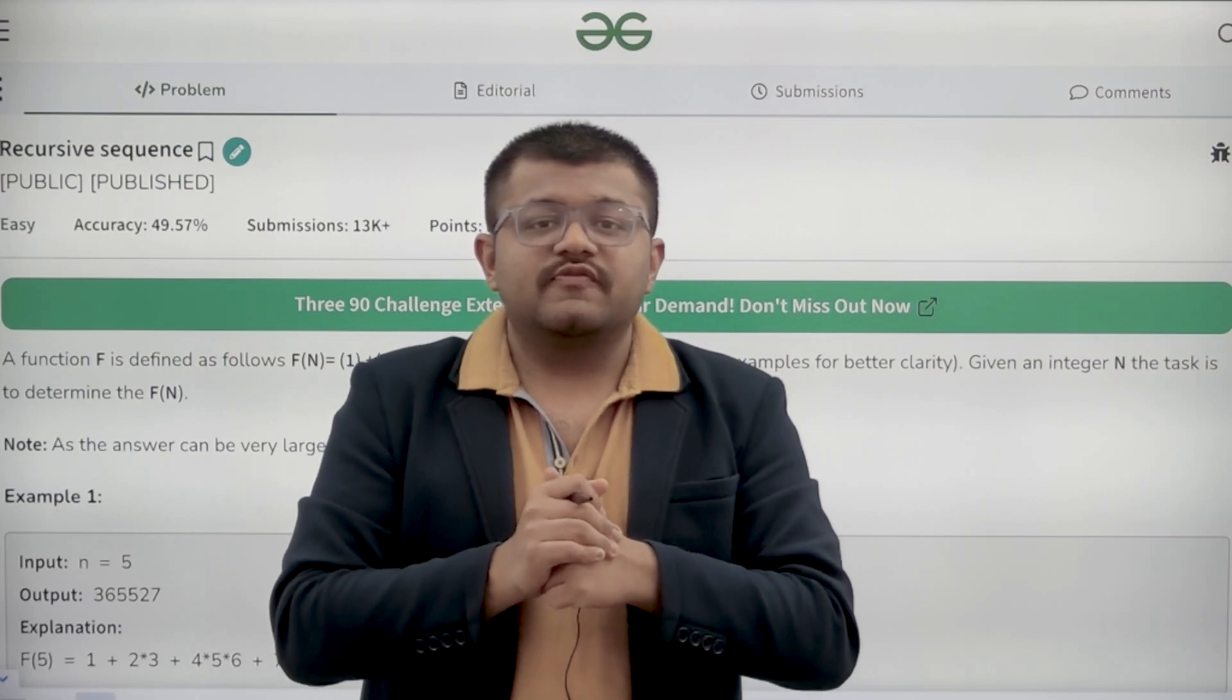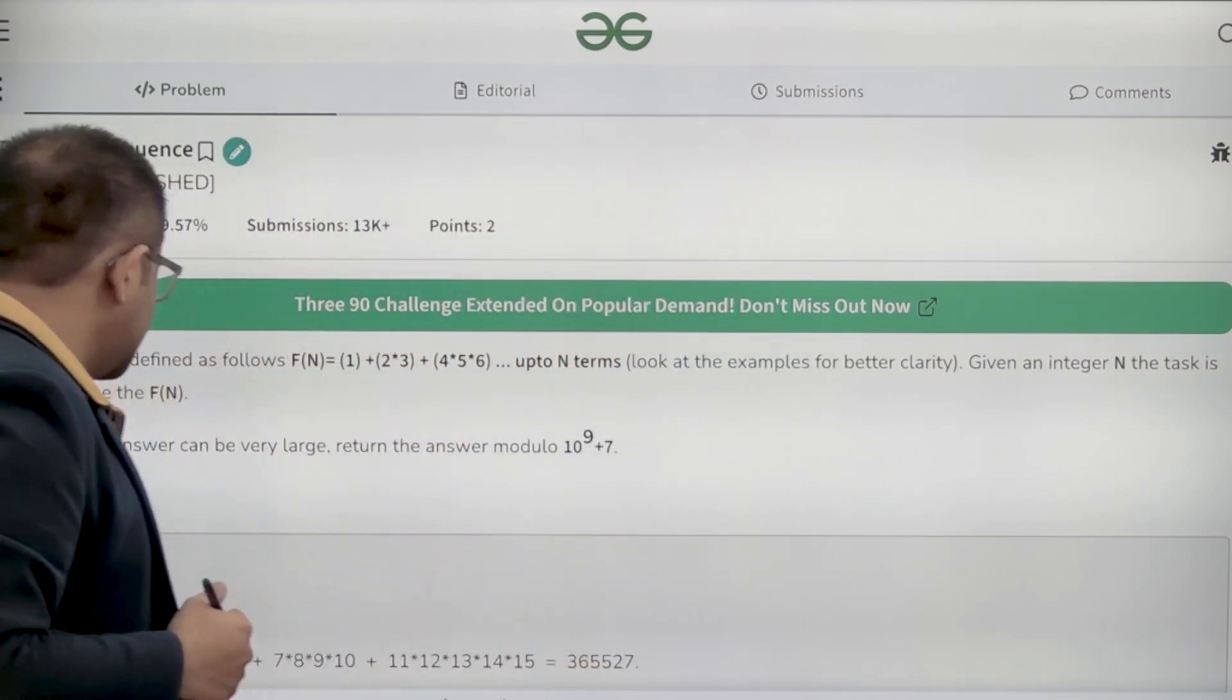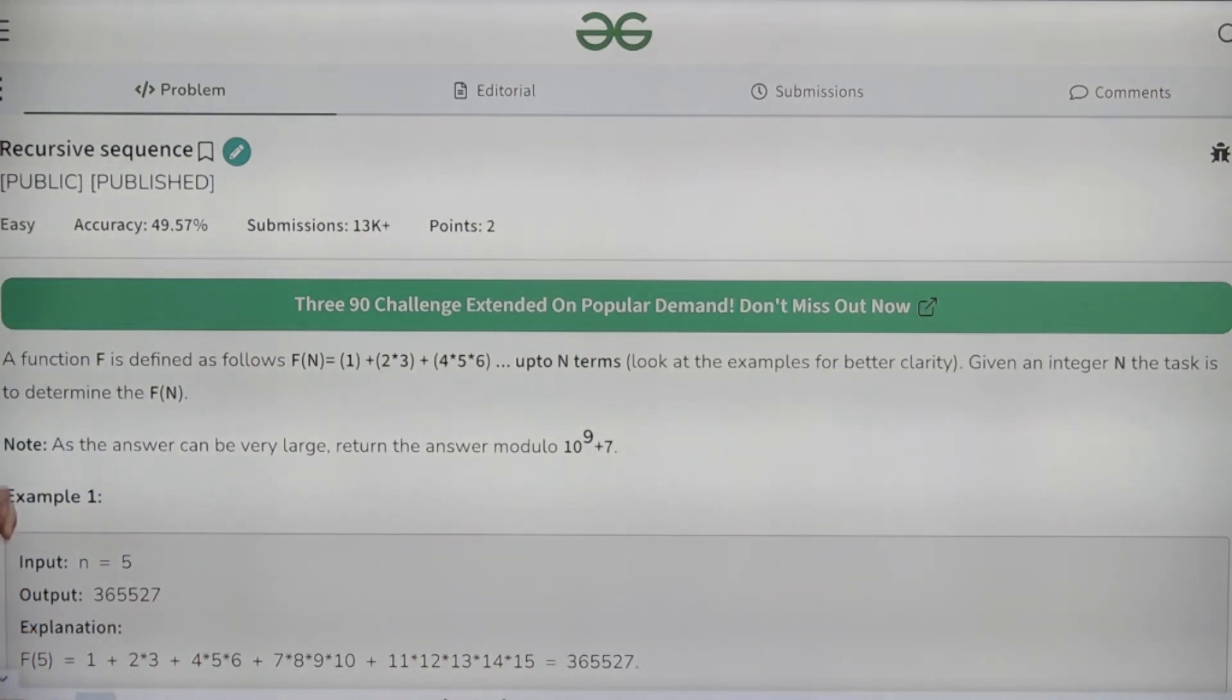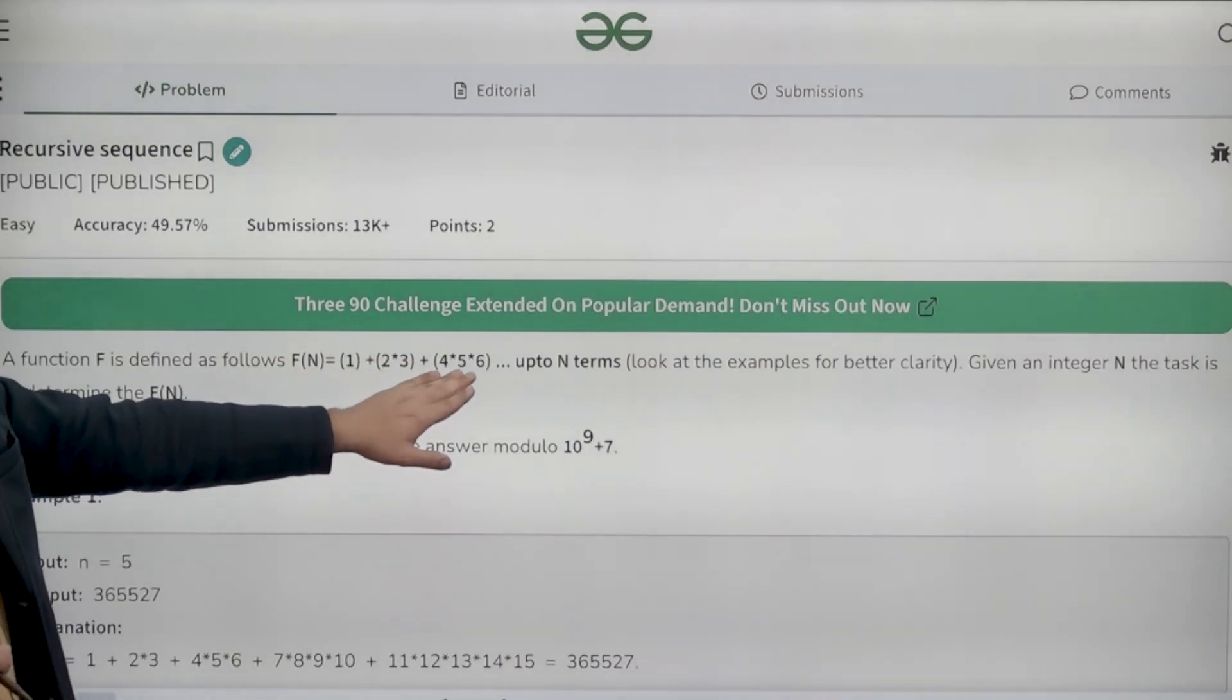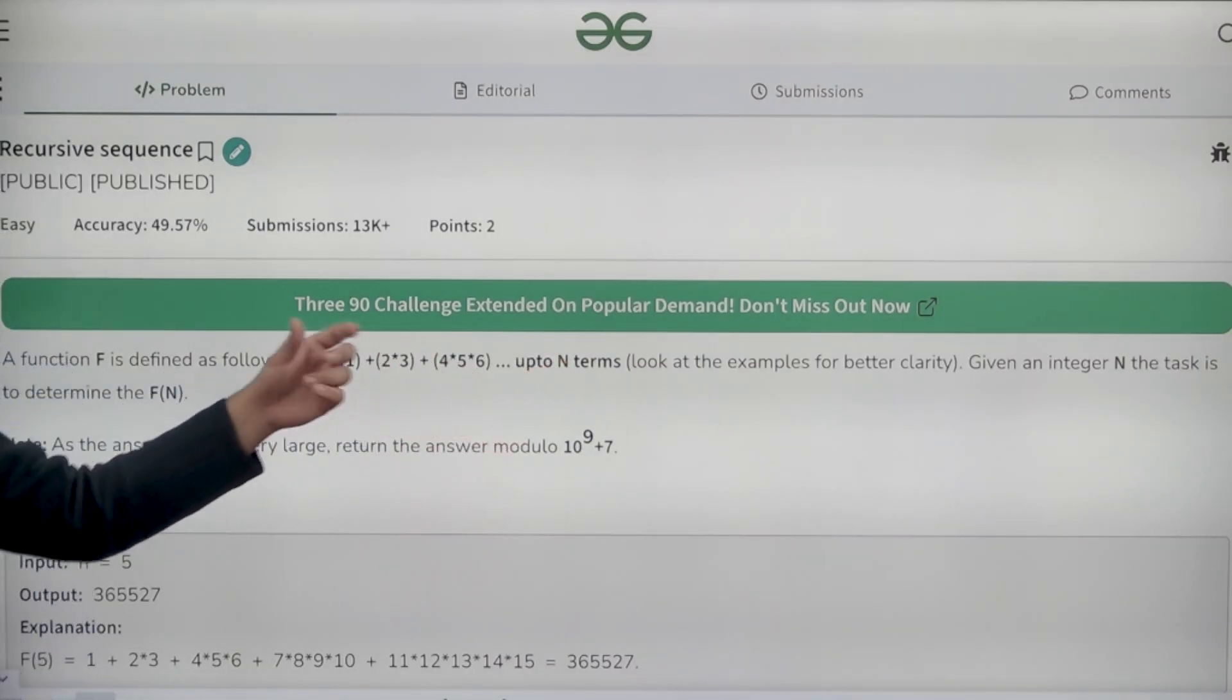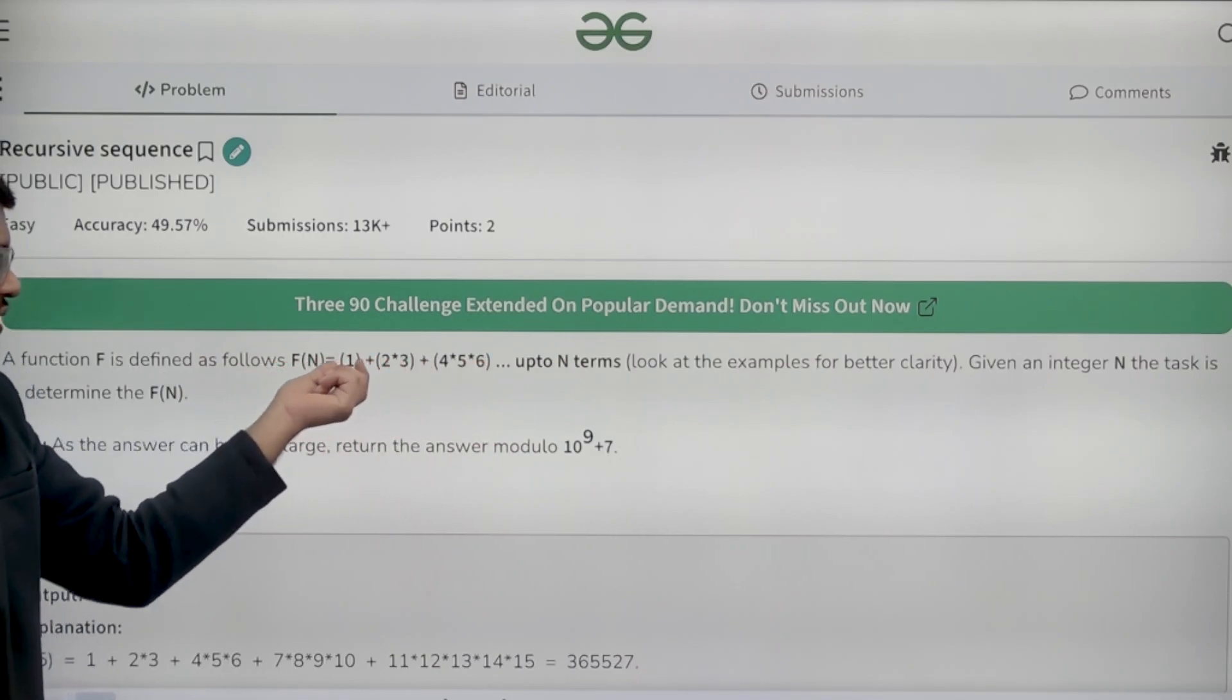In this video, we are going to look at the solution of the problem that is recursive sequence. First of all, let us start by understanding the question. What does the question say? A function f is defined as follows: f of n is 1 plus 2 into 3 plus 4 into 5 into 6 up to n terms. So, if we are given n equals to 3, we will go up till this because this is first term, this is second term, this is third term and so on.